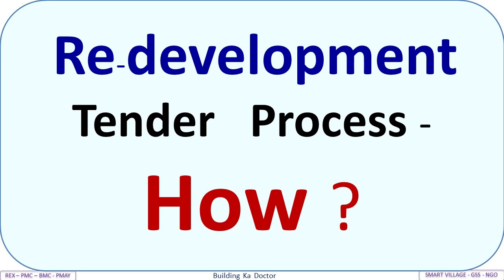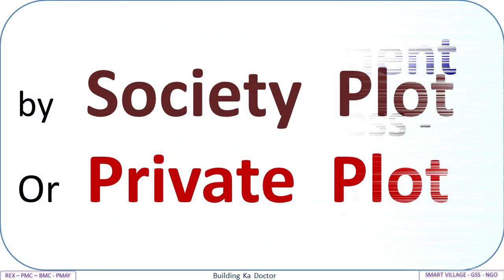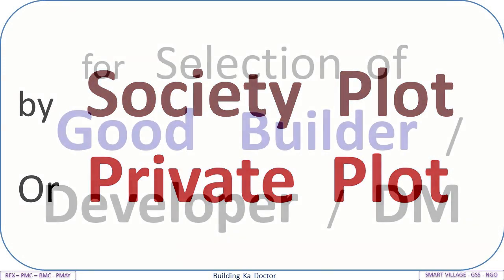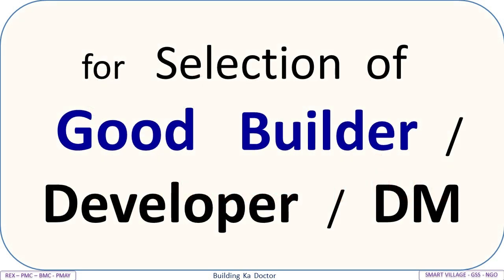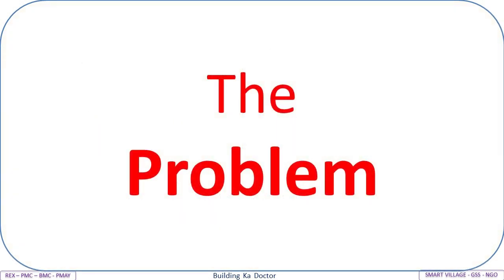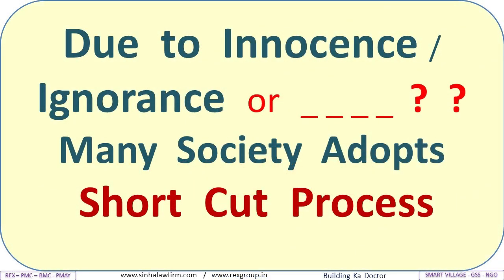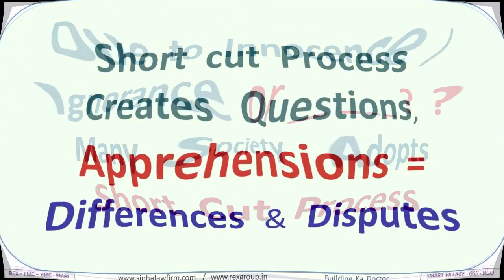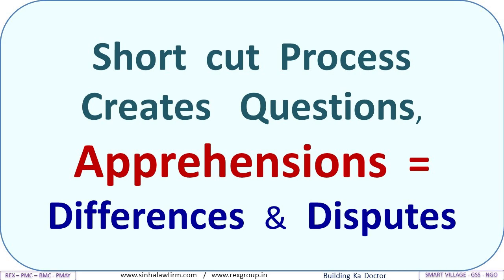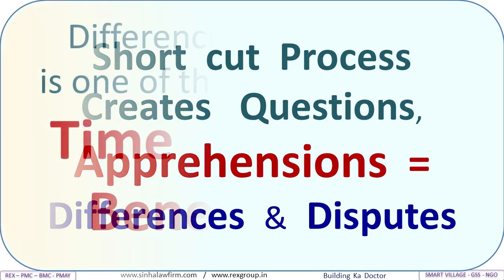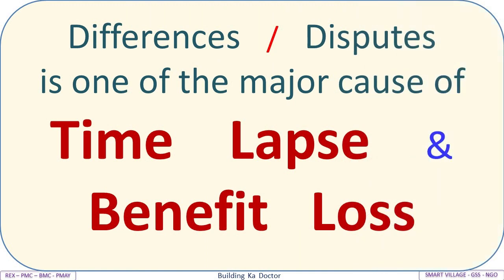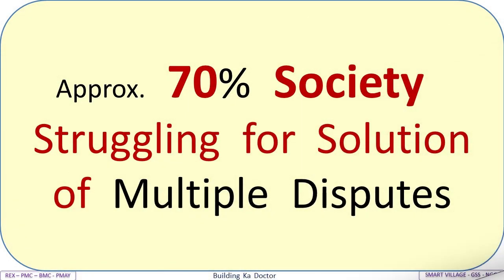Redevelopment tender process: how does a society or private plot select a good builder or developer? Due to innocence or ignorance, many societies adopt a shortcut process. This shortcut process creates questions, apprehensions, differences, and disputes — which are one of the major causes of time lapse and benefit loss. Approximately 70% of societies are struggling for solutions to multiple disputes.